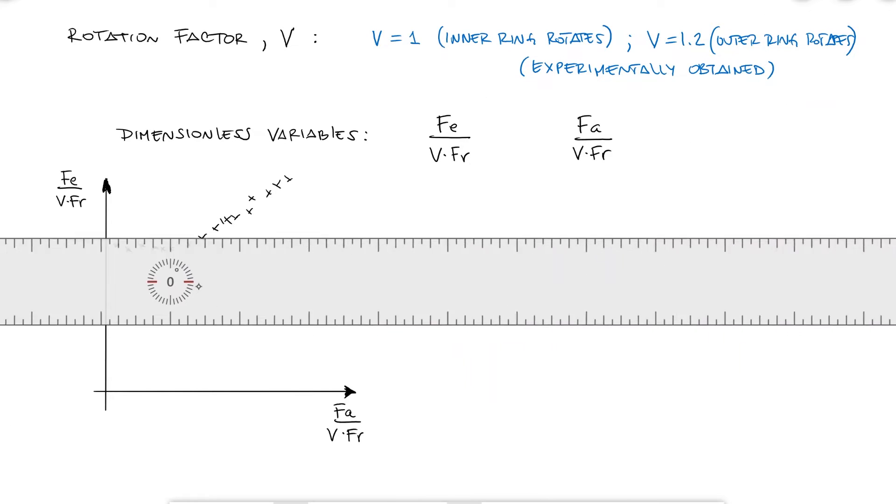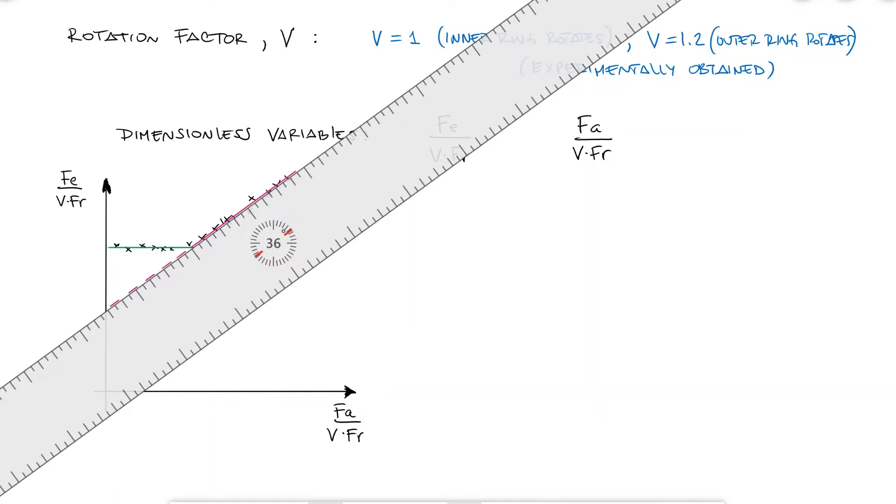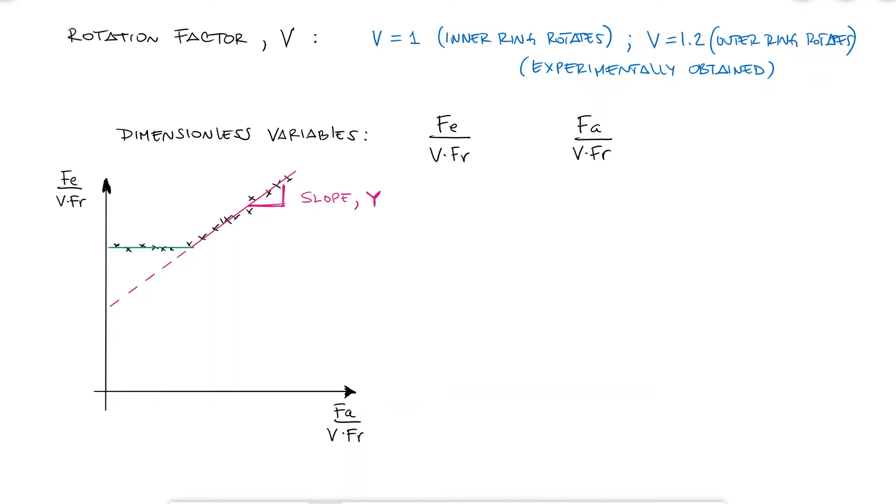The first one is an almost straight horizontal line, and the second one is also a straight line but it has a slope we're gonna call capital Y. The abscissa for when the X axis value is E is where the intersection between these lines occur.